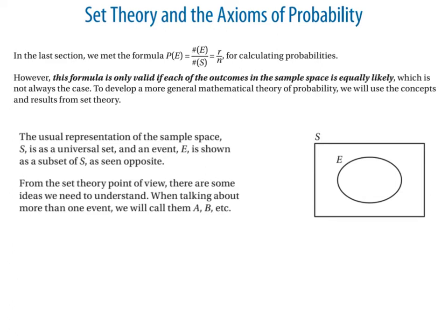We're just going to run through a few of the set notation again, just so you're happy with what's going on. For sample space, normally we would call that U for the universal set, but here it's called S for the sample space. What we now have is our sets here are events. Normally we talk about two or three events, so we'd label them A, B, C like we did before.